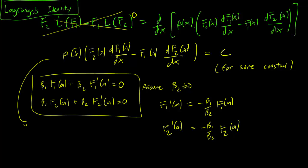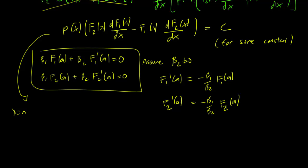So we plug in a here, in this equation, and what we get is that p a f2 a, now the derivative of f1 a is just going to be minus beta1 over beta2 f1 a, and then we also subtract f1 a, and the derivative of f2 a is just going to be minus beta1 over beta2 f2 a, equals c.